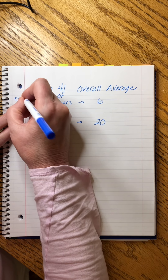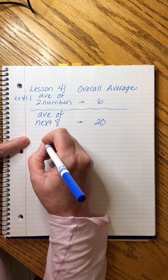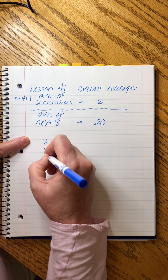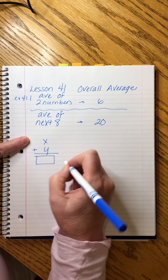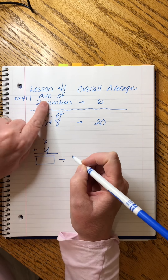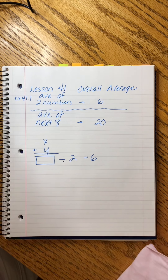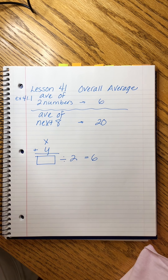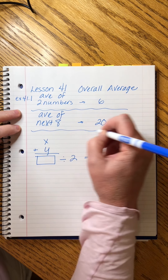This is example 41.1. Let's consider just this much of the problem. We took two numbers — I'm going to call them X and Y. We added them up, we got a total, we divided by two because there were two numbers, and we're told that the average was six. This is the presentation that I've used to calculate the average.